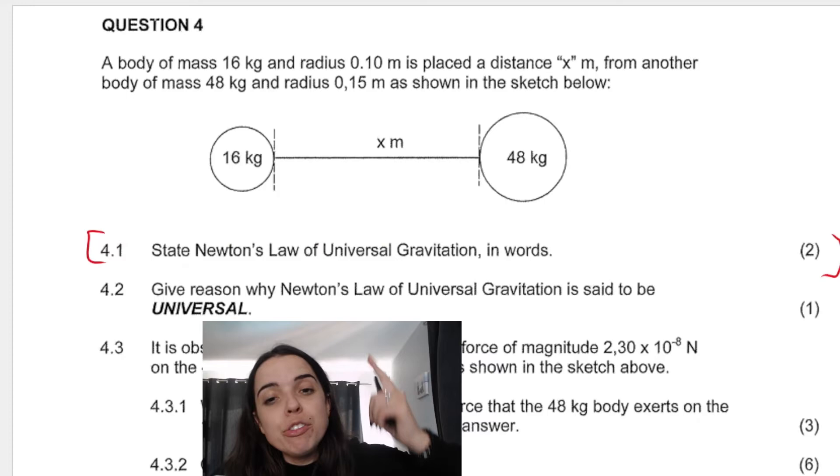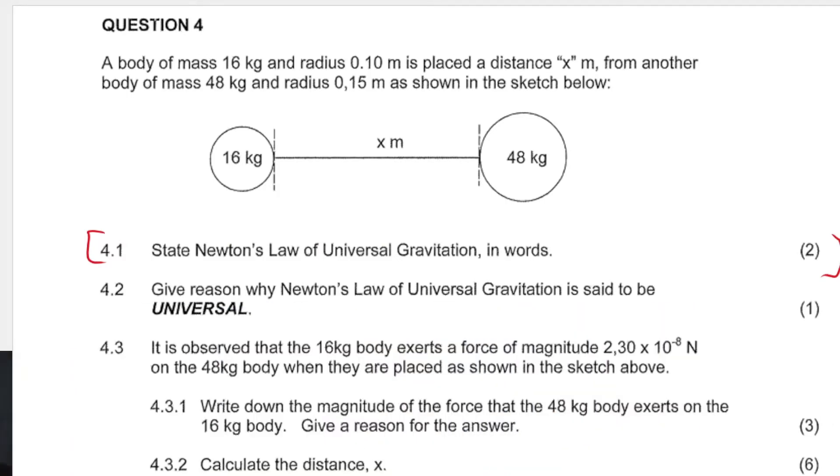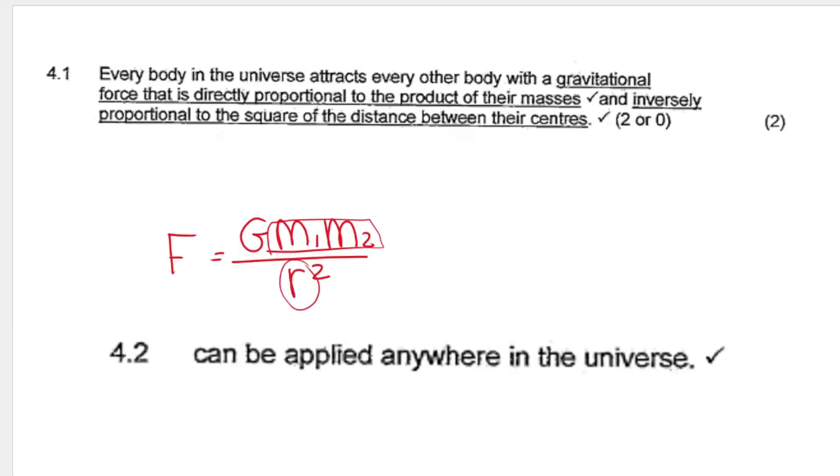My next question says give a reason why Newton's law of universal gravitation is said to be universal and I hope it's obvious that it's universal because we can apply this law, this formula and this law anywhere in the universe.